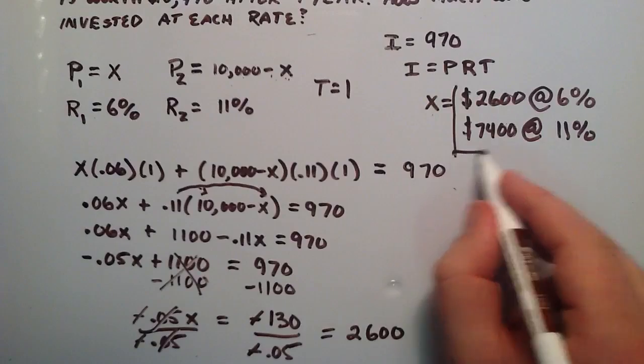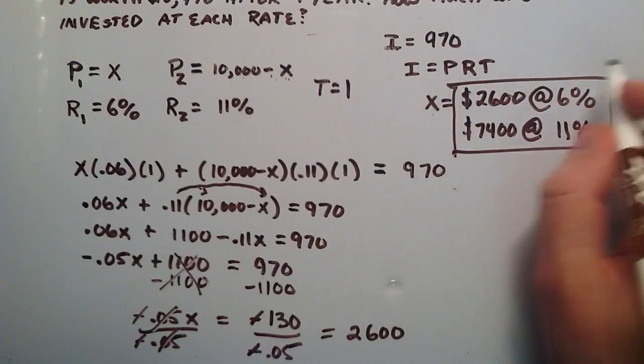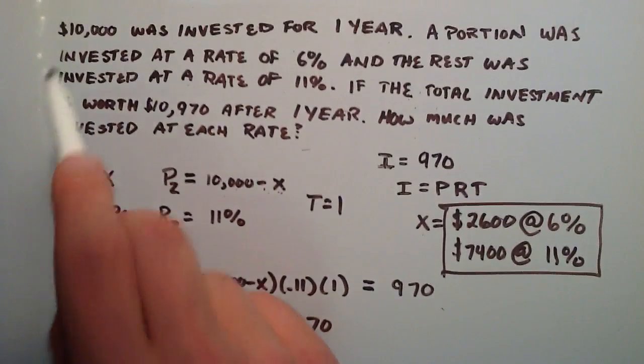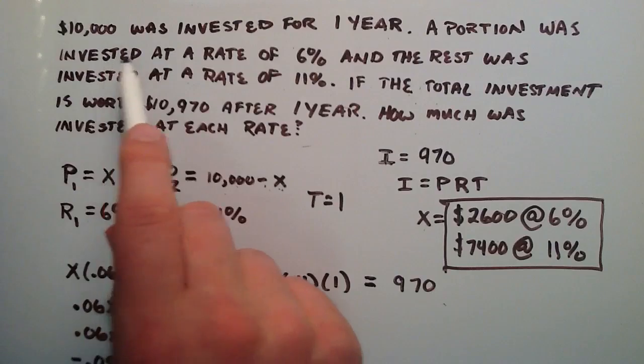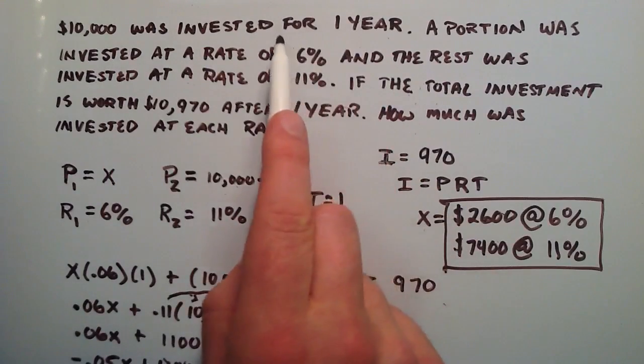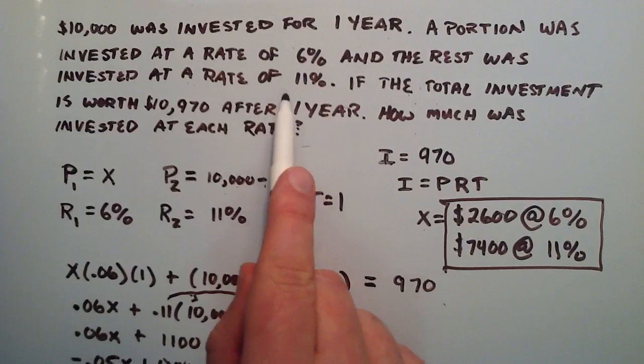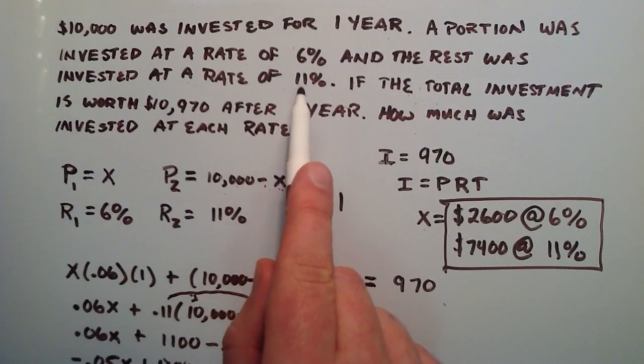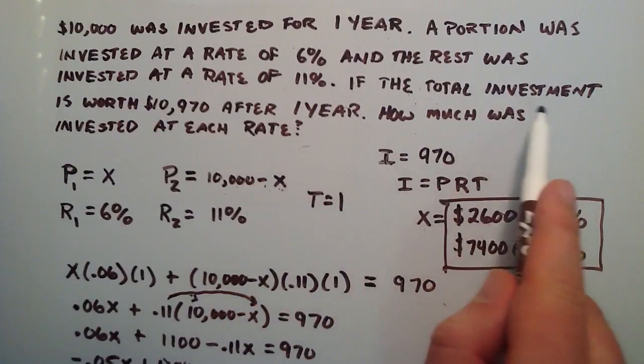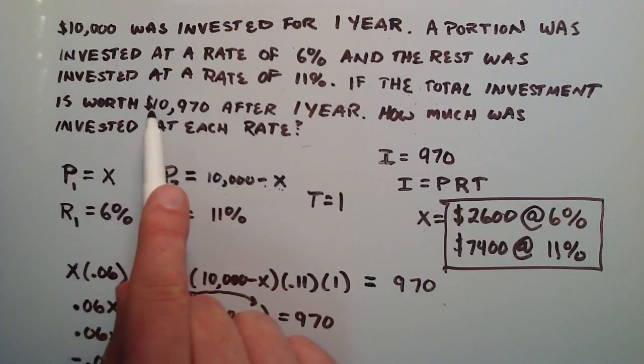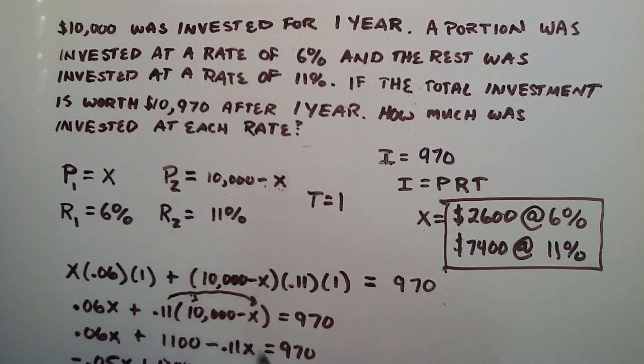So that is our solution right there. So if you start out with $10,000 and you invest it for one year and you invest $2,600 of it at 6% and then you invest the other $7,400 of it at 11%, at the end of the year you will have $10,970 and will have made $970 in interest.